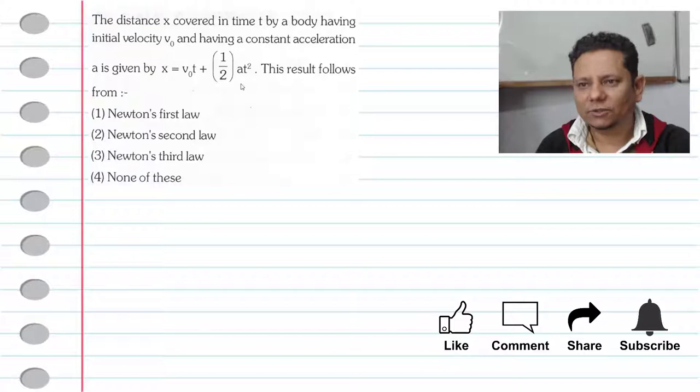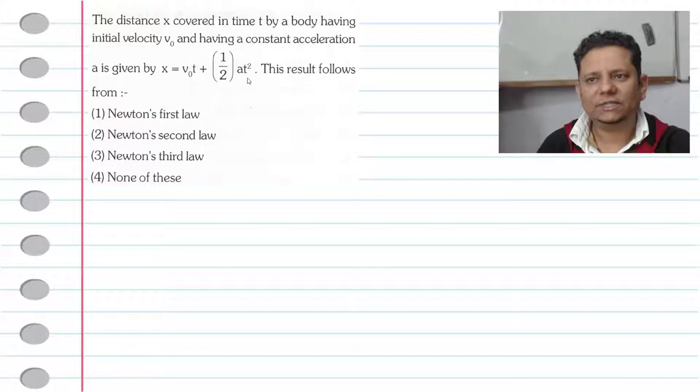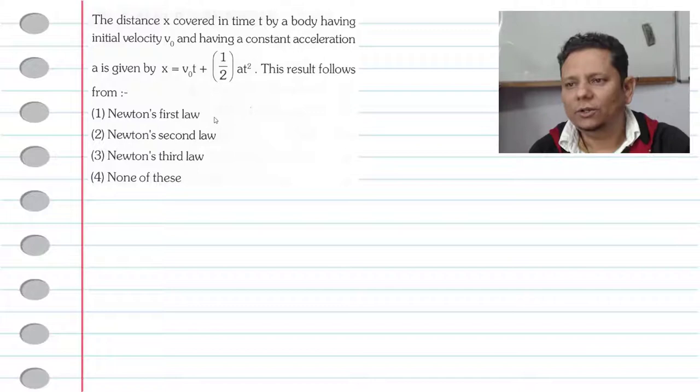This result follows from—now if we notice this equation, this equation is Newton's second equation of motion, which says s = ut + (1/2)at². The question asks: this result follows from Newton's first law of motion, second law of motion, third law of motion, or none of these.